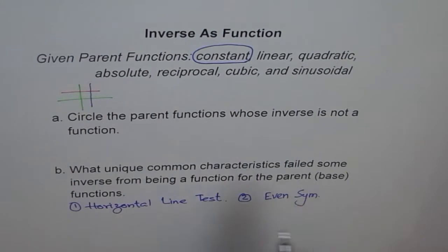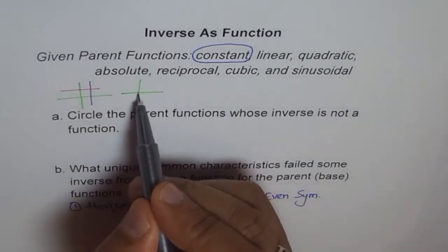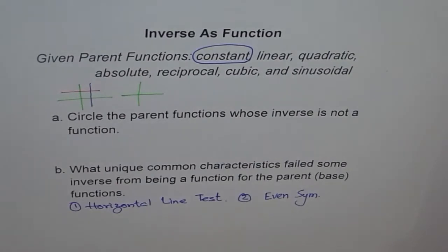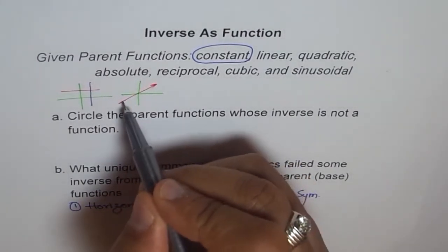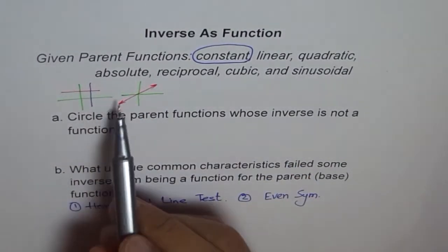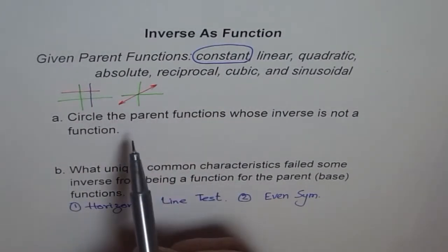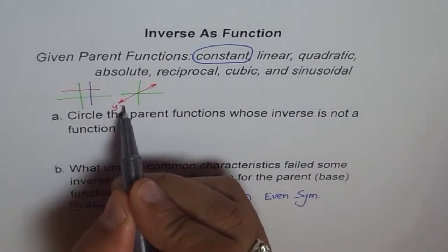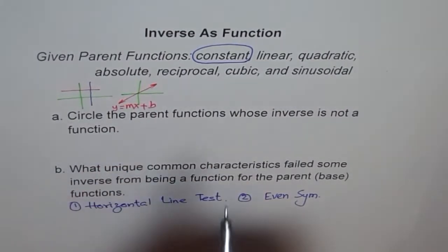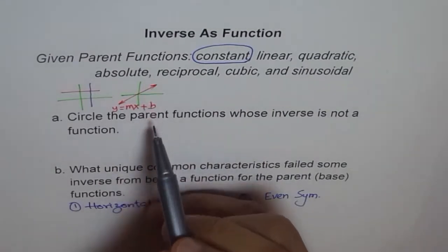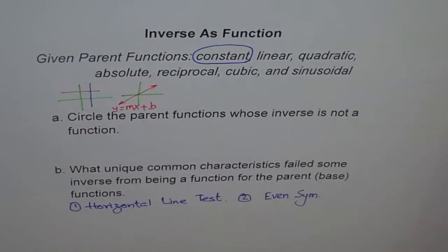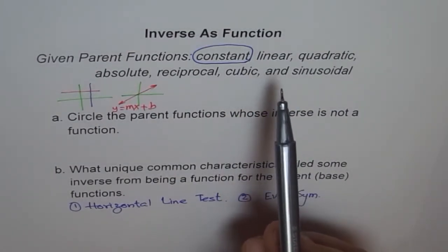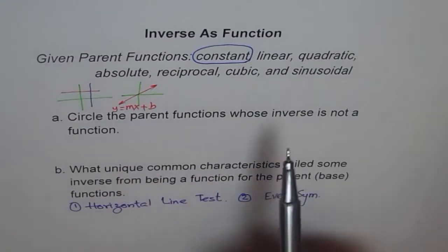I purposely kept the linear function separate to highlight that we are considering lines of the form y = mx + b, not horizontal lines. I'm calling the horizontal line the constant function. Note that a vertical line is also technically linear, but we don't consider it here because a vertical line itself is not a function. The linear function's inverse will be a function, so that's fine.